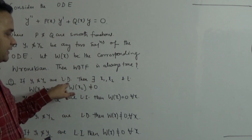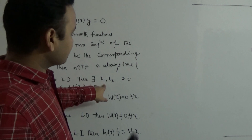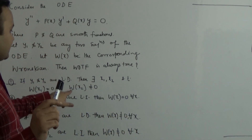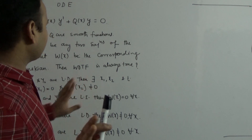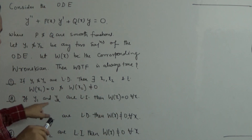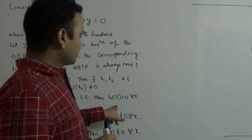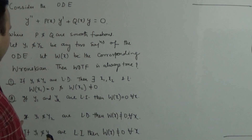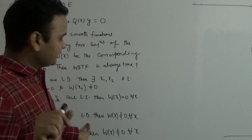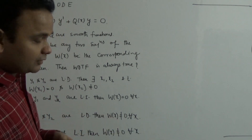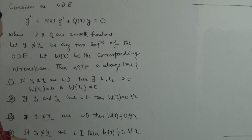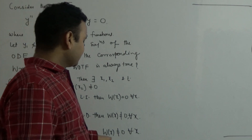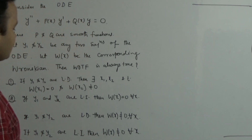The options are: Option 1 — if y1 and y2 are linearly dependent, then there exist x1 and x2 such that Wronskian at x1 equals 0 and Wronskian at x2 is not equal to 0. Option 2 — if y1 and y2 are linearly independent, then Wronskian of x equals 0 for all x. Option 3 — if y1 and y2 are linearly dependent, then Wronskian is not equal to 0 for all x. Option 4 — if y1 and y2 are linearly independent, then Wronskian is not equal to 0 for all x.